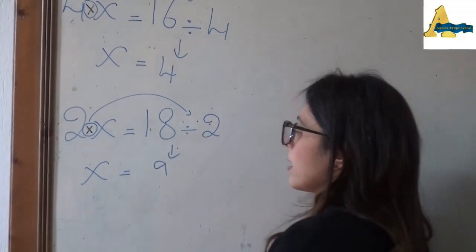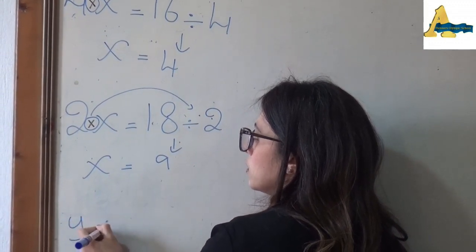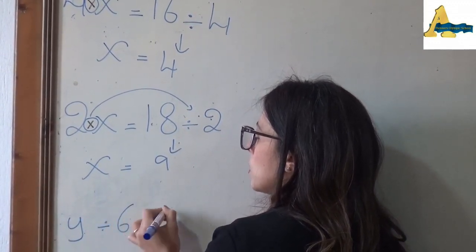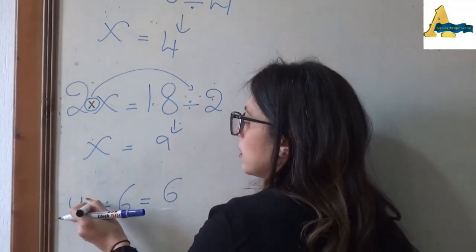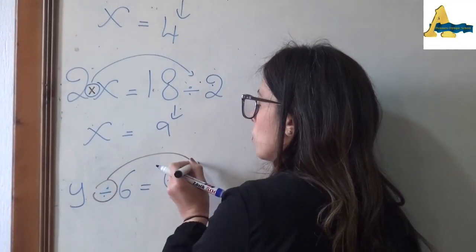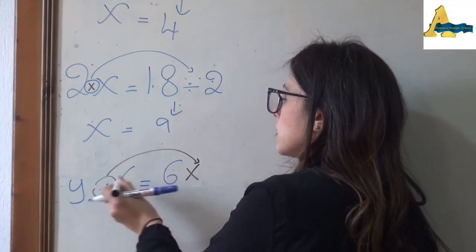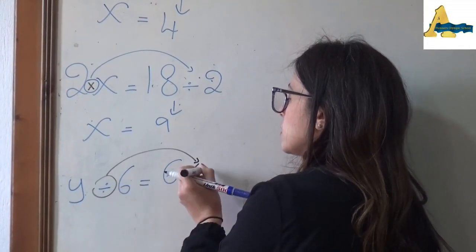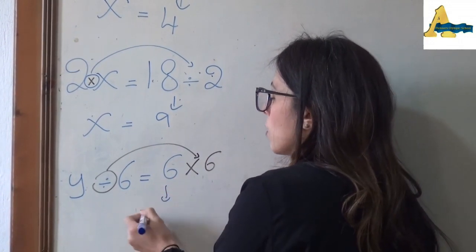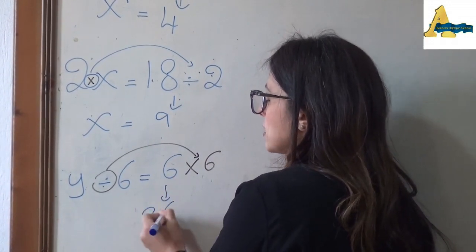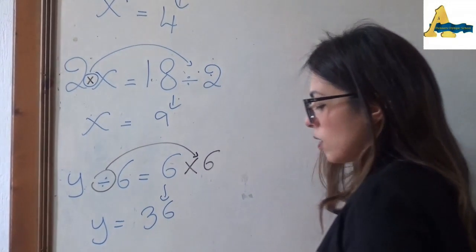If I have y ÷ 6 = 6: as we said, divided is going to go to the other side as times. I have 6 times 6 = 36, that means y = 36.